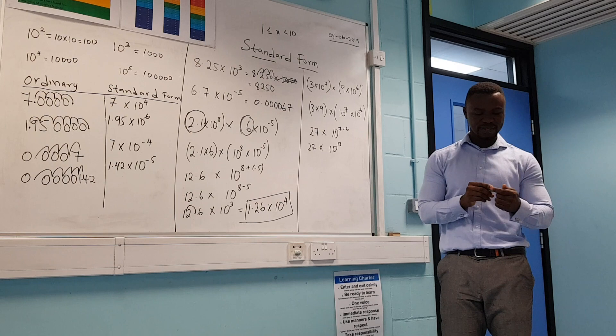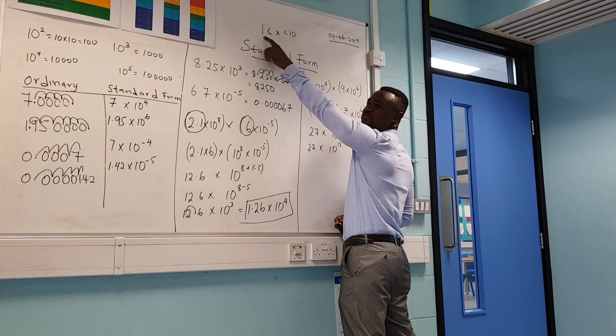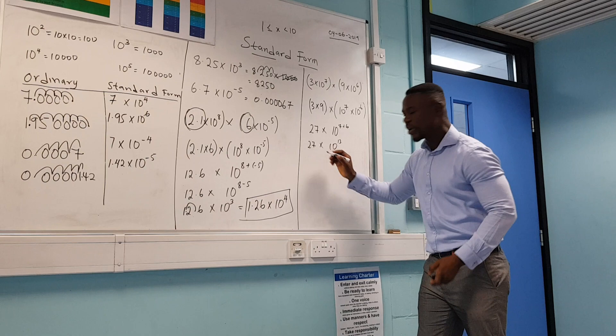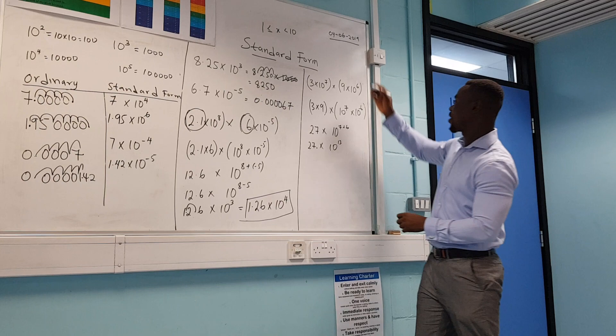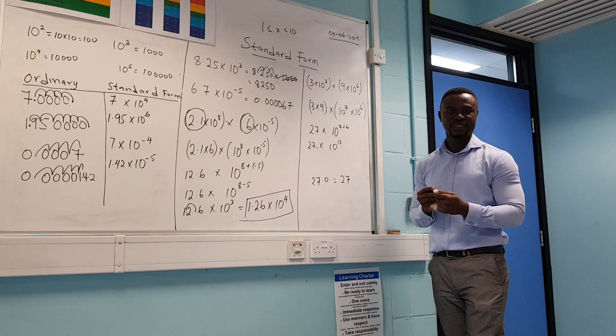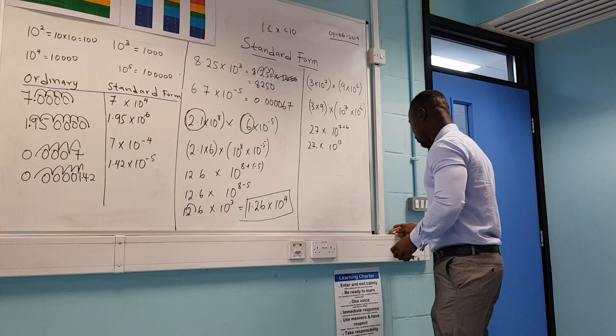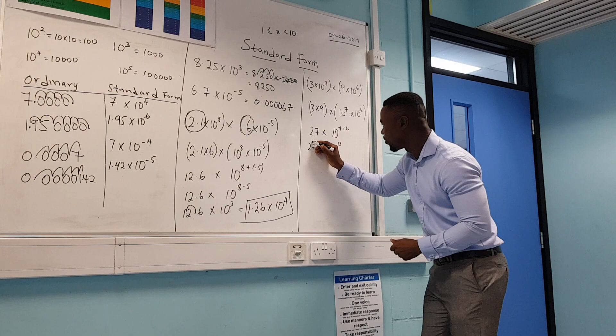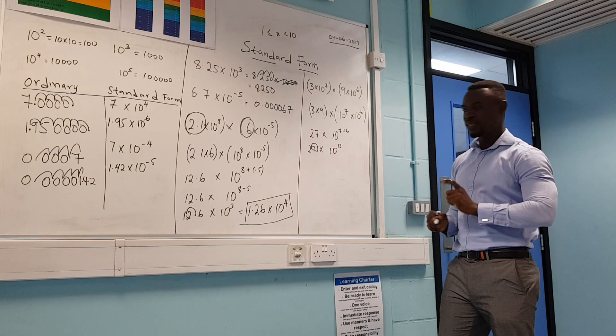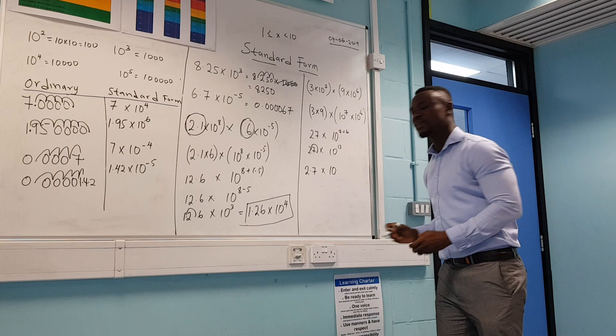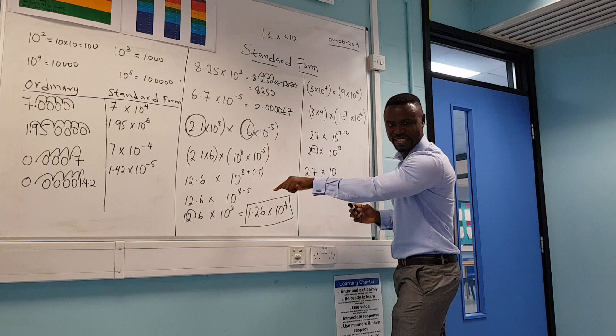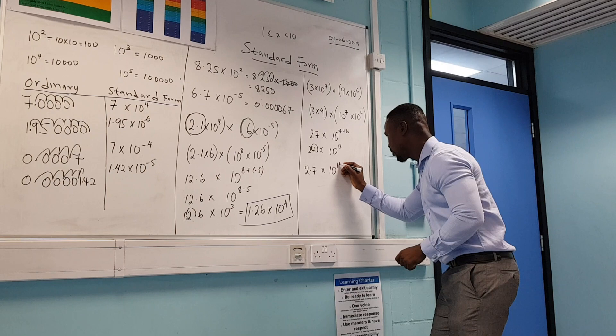But 27 is bigger than 10, so this is not in standard form. Pretend there's a decimal point at the end — 27.0 is the same as 27. To get into standard form, I move the decimal point between the 2 and 7, giving 2.7. Moving the decimal point to the left means I add 1 to the power: 13 plus 1 gives 14. So the answer in standard form is 2.7 times 10 to the power of 14.